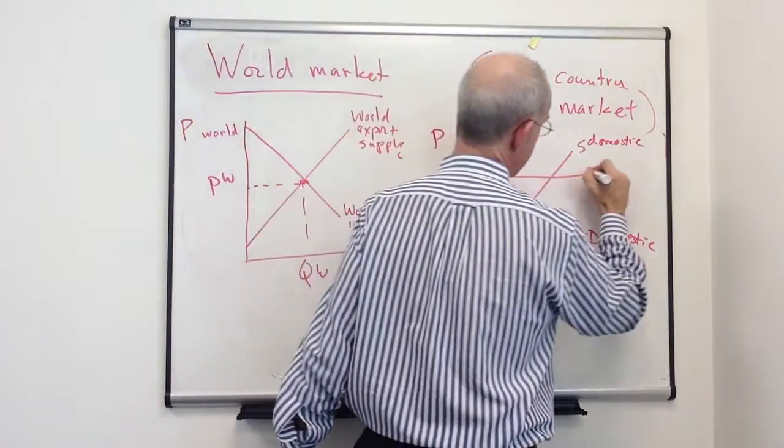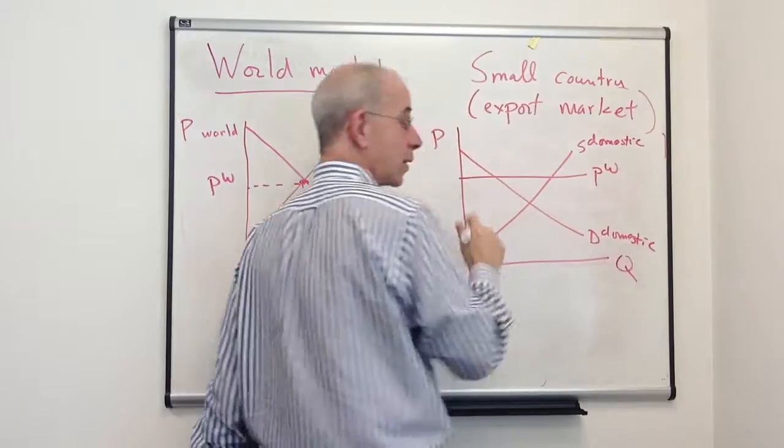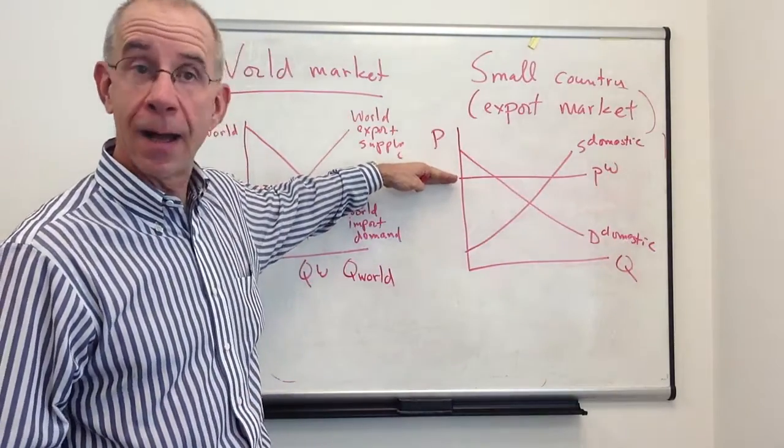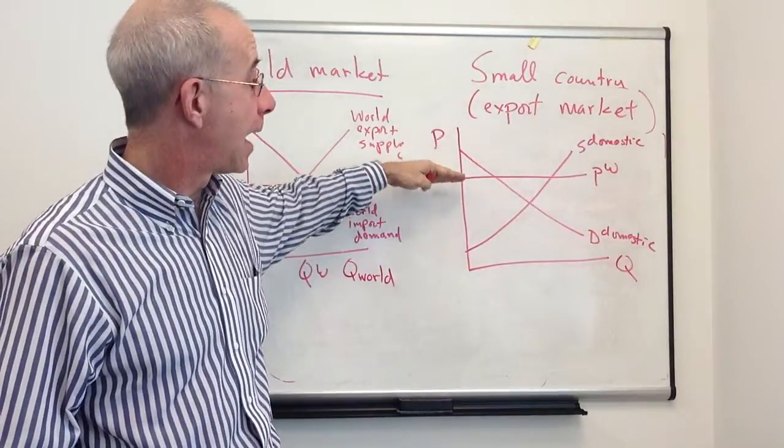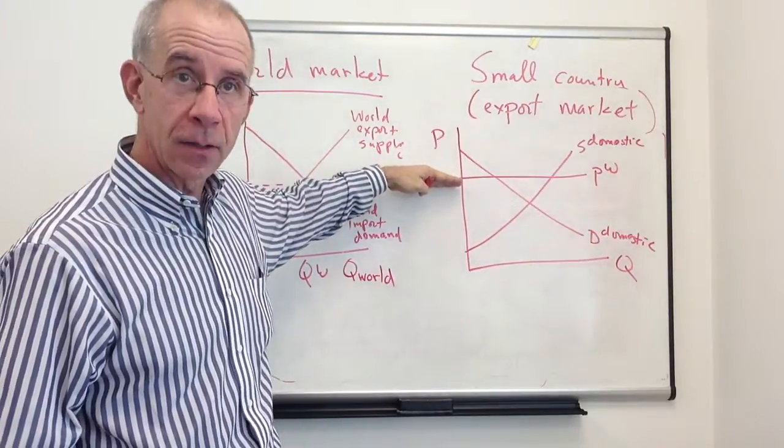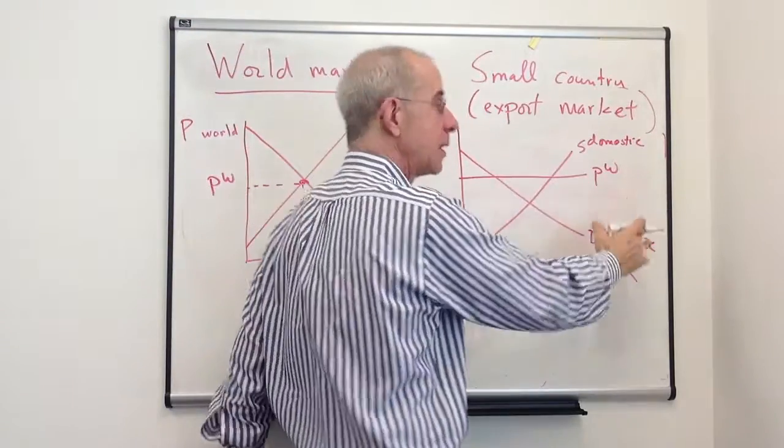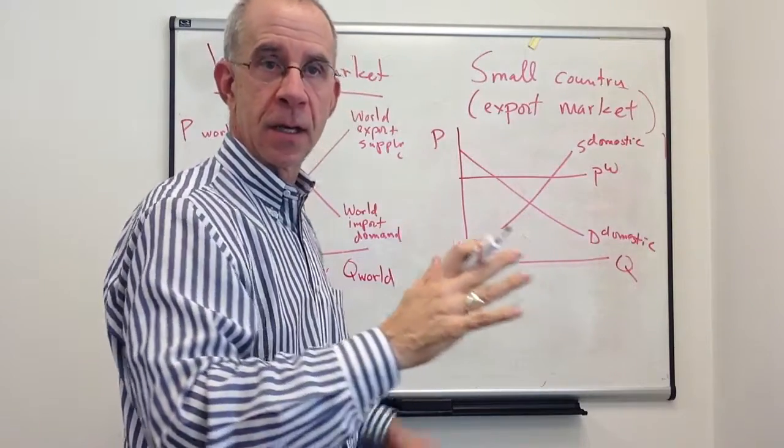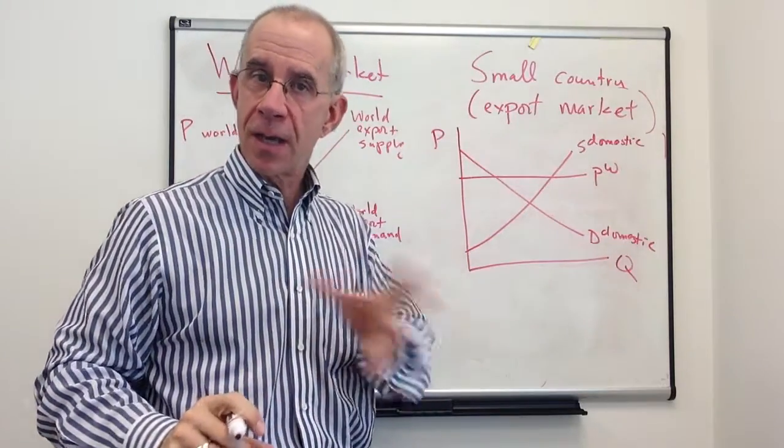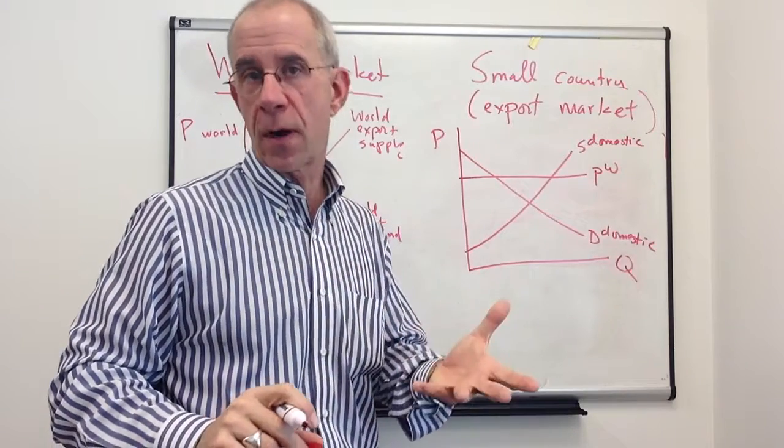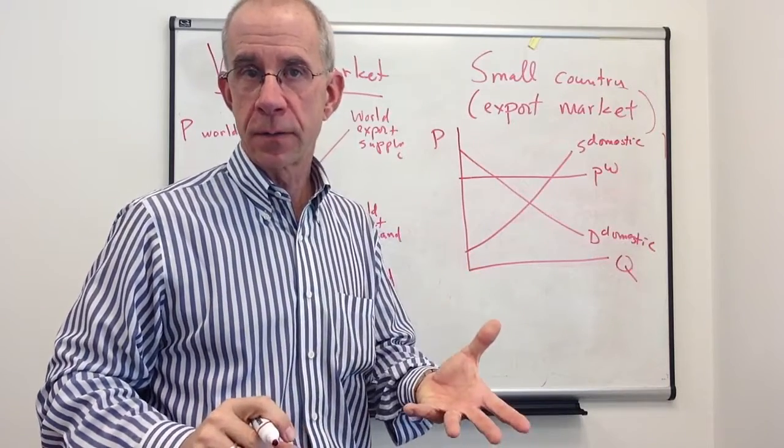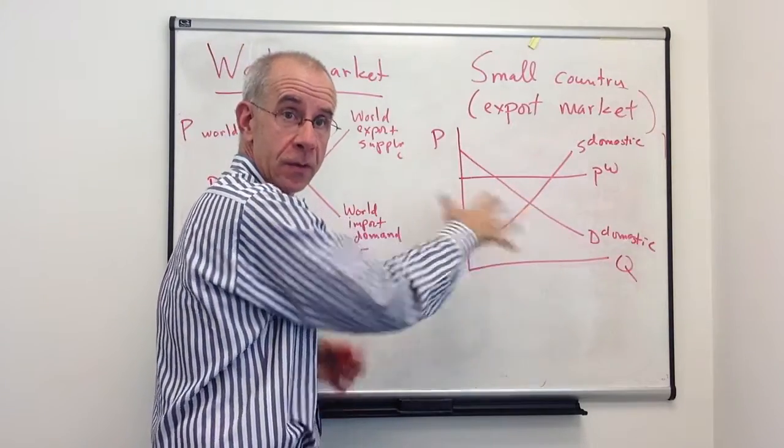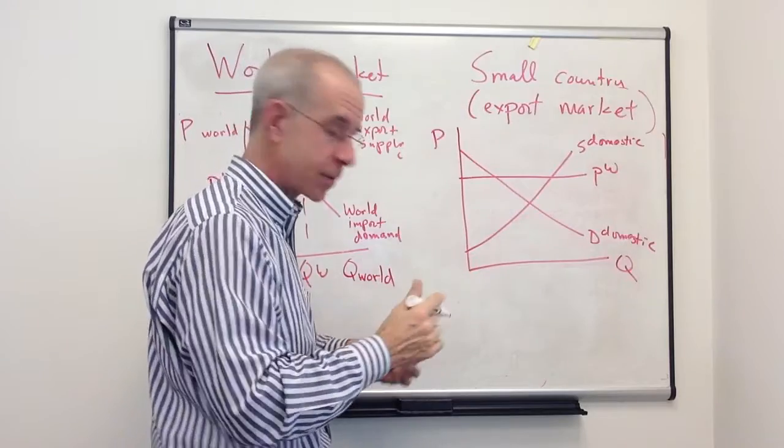And the world will buy as much as Guatemala wants to sell at this price, take it or leave it. Supply in Guatemala could increase, that's the world price. Demand in Guatemala could decrease, that's the world price. So the small country cannot affect the world price of the product. And this is going to be typically the graph we're going to be using when we analyze a small country in its export markets.